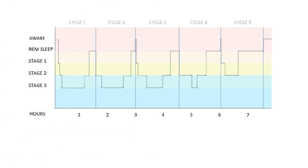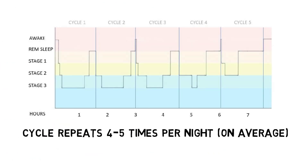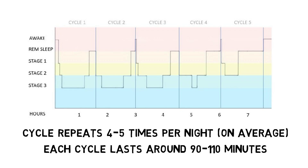Throughout the night, a person cycles through these stages of sleep usually around four or five times, with each cycle lasting about 90 to 110 minutes.